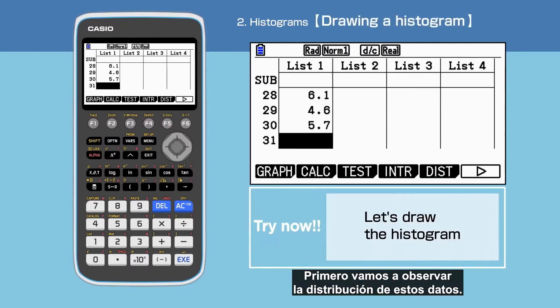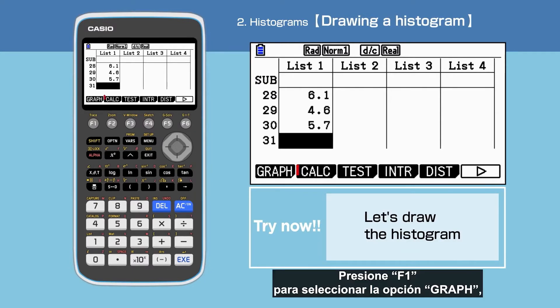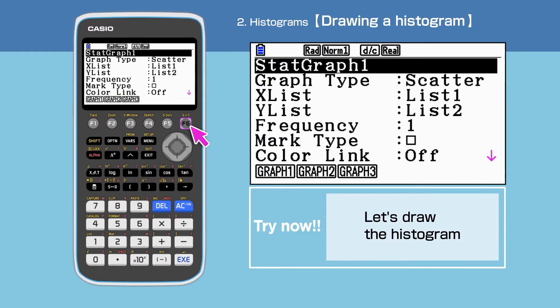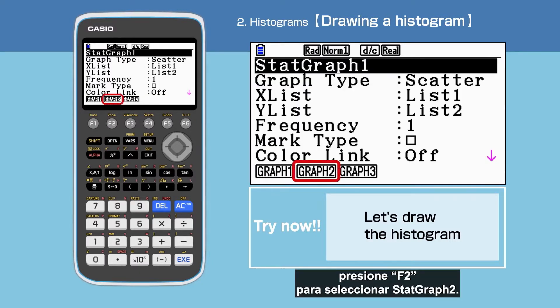First, we will observe the distribution of this dataset. Press F1 to select Graph, then F6 to open Setup. Press F2 to select Start Graph 2.